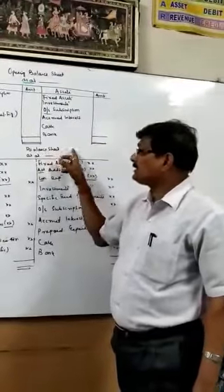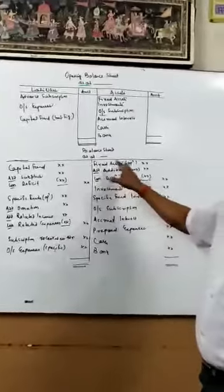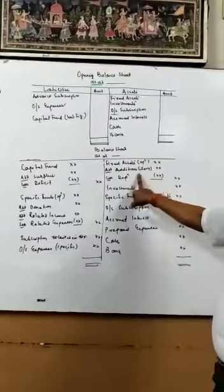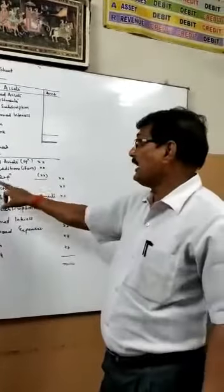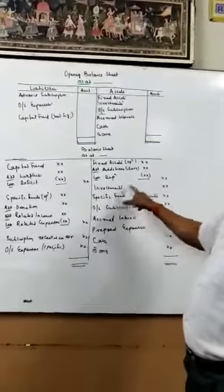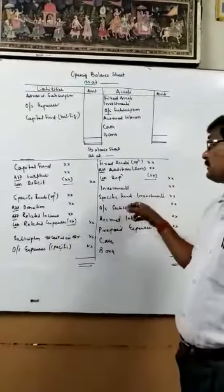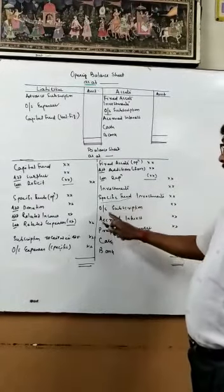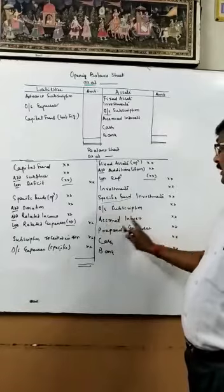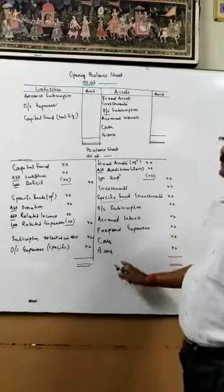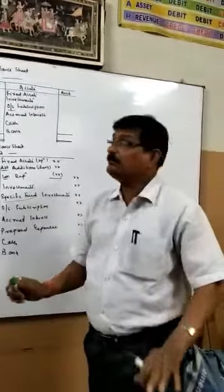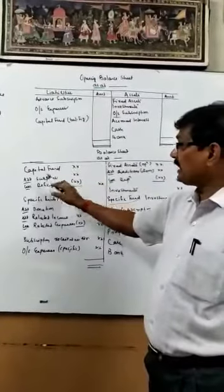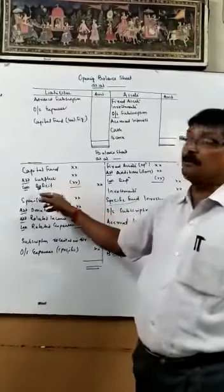Thereafter, we have to prepare the closing balance sheet, which will also include adjustments. Fixed assets: take the opening balance, add additional assets purchased, and deduct depreciation. Then investments, specific fund investments — I will explain what specific funds are. Then outstanding subscription, accrued interest, prepaid expenses, and cash and bank — just like the balance sheet of a trading concern. Then capital fund: add surplus if any, or deduct deficit.